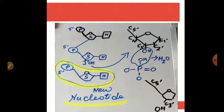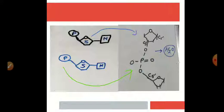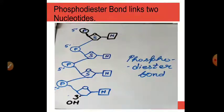You can see the new nucleotide is having this phosphate OH and same process is going on. And likewise, it forms phosphodiester bonds. So you can see a lot of phosphodiester bonds and create a long chain.